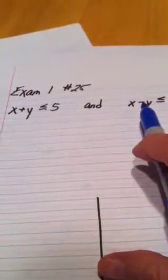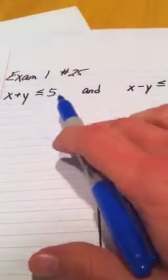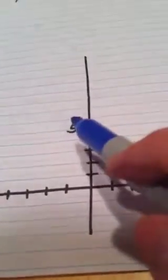Two equations that we have to graph, and because there's an x and a y, it's not just going to be on a number line, it's going to be on a full out x, y grid.